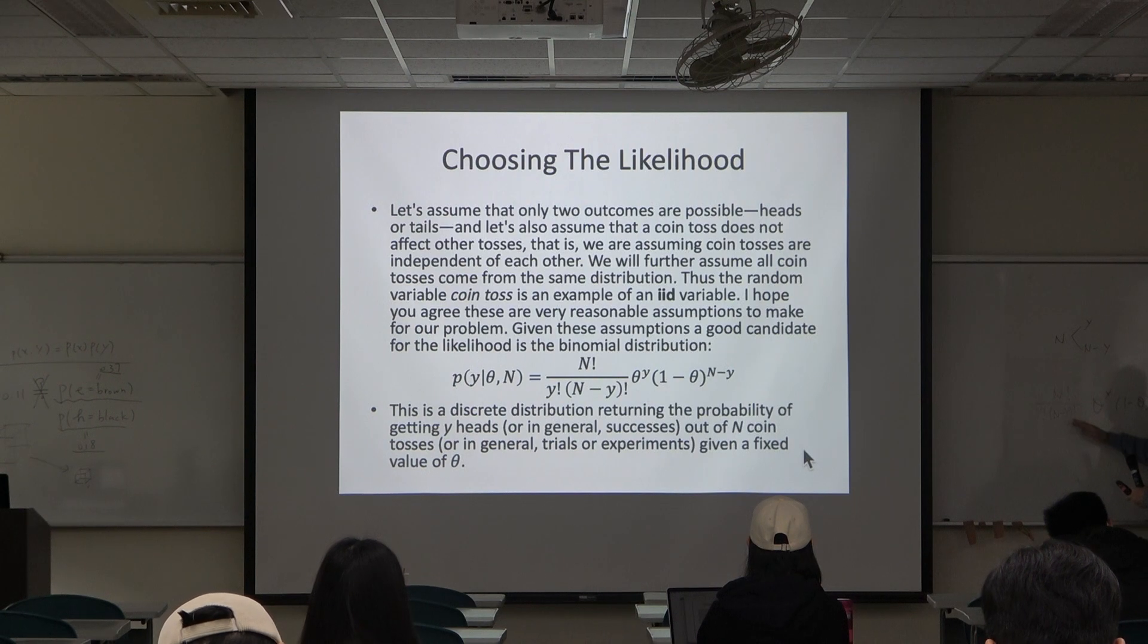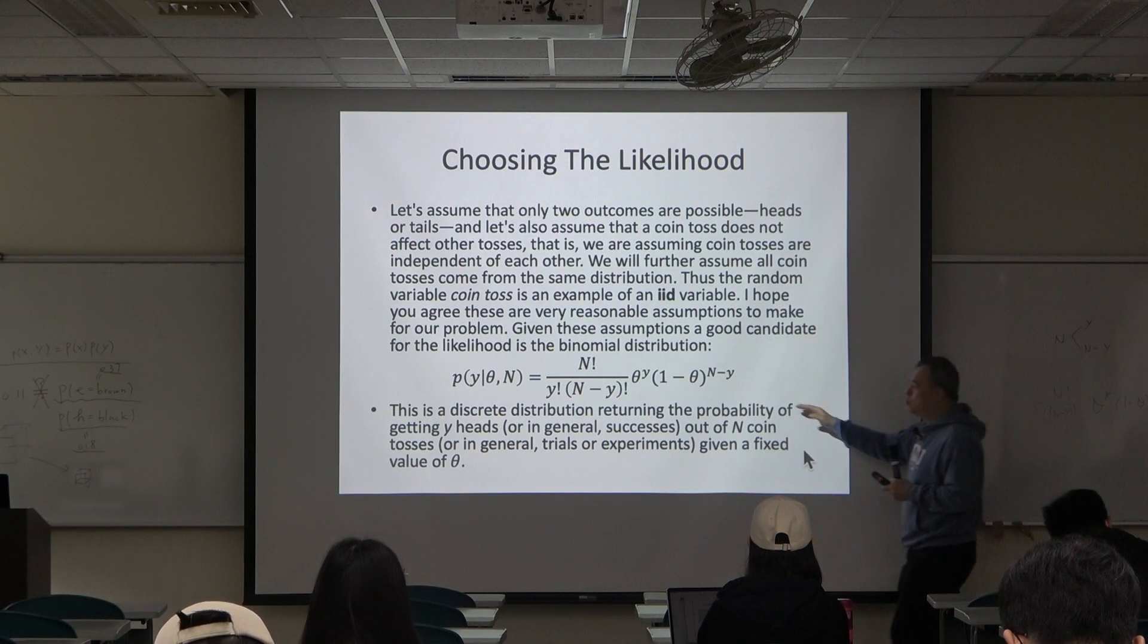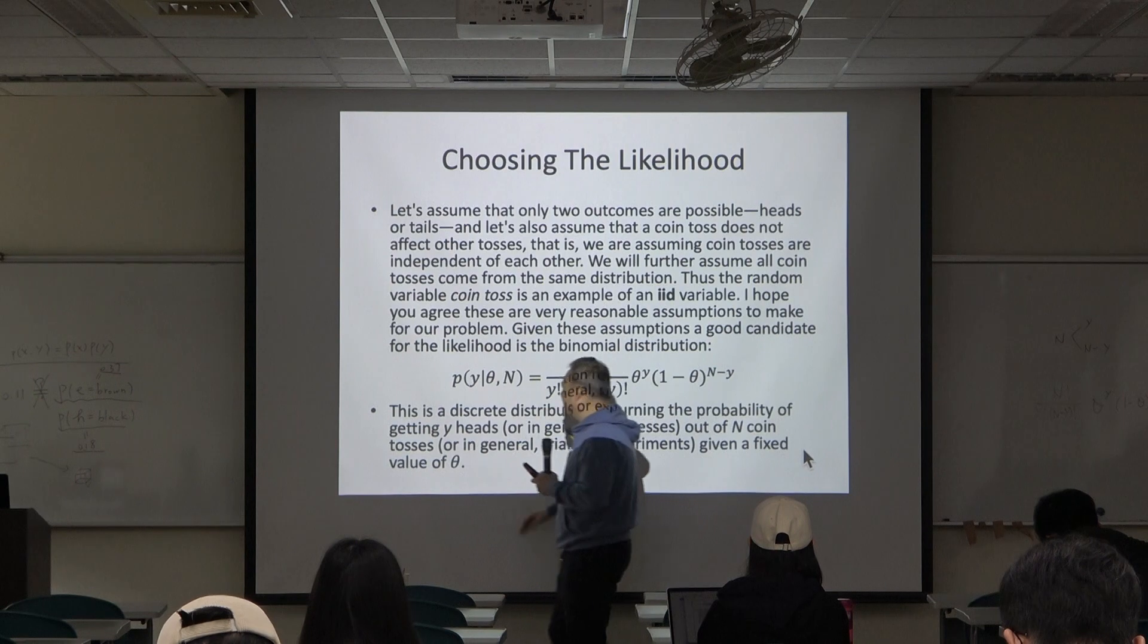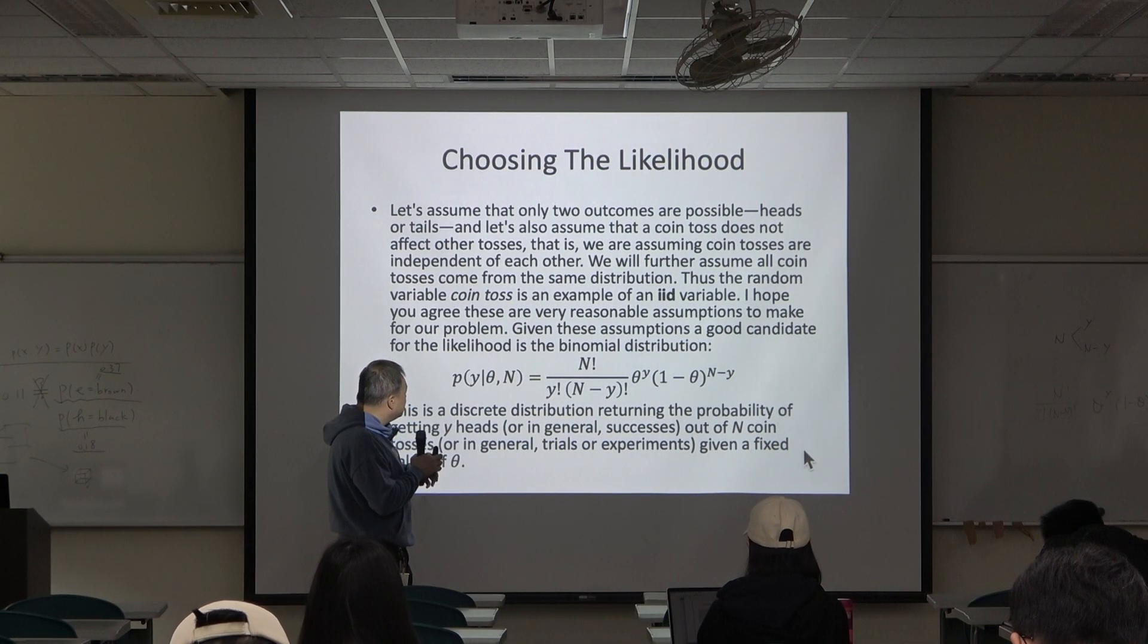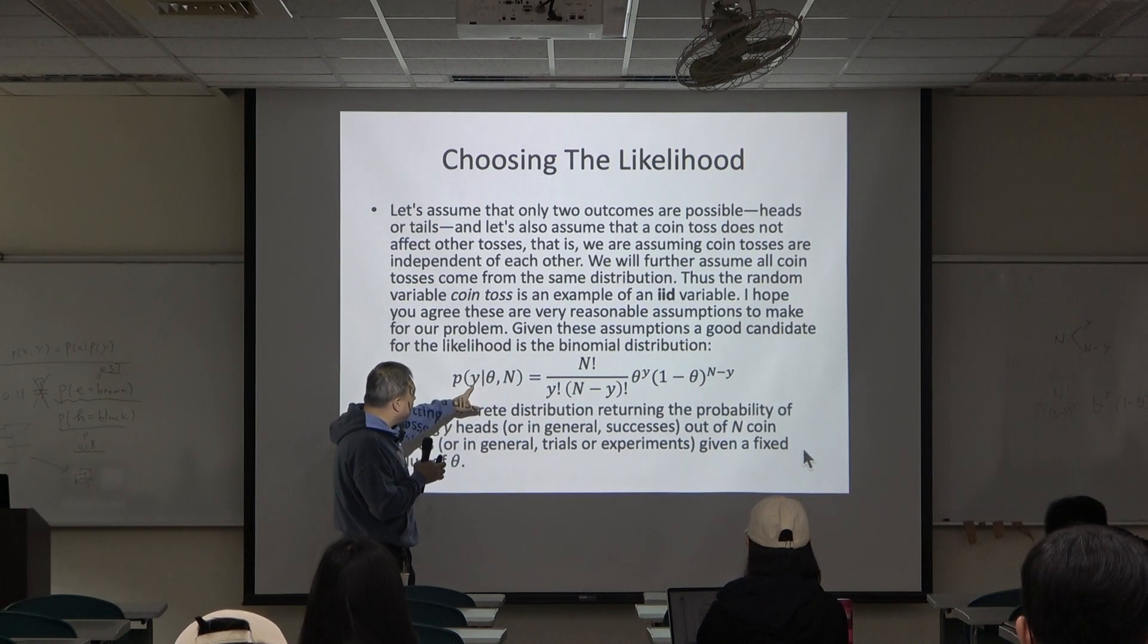For each value of y, you have a different probability. In this formula, there are two parameters actually. N is fixed, n is not a parameter. Theta is a parameter, y is a parameter.